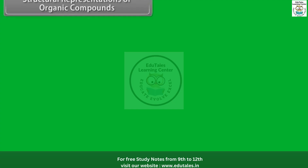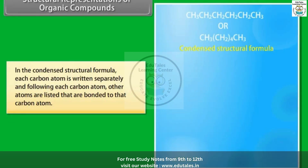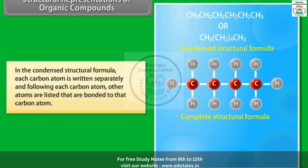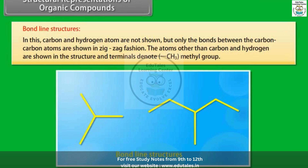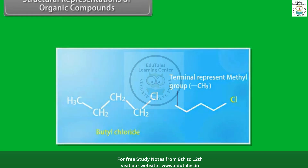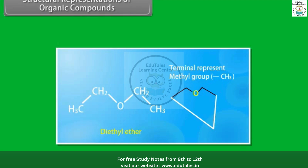In the condensed structural formula, each carbon atom is written separately, and following each carbon atom, the other atoms bonded to it are listed. In bond-line structures, carbon and hydrogen atoms are not shown; only the bonds between carbon-carbon atoms are shown in a zigzag fashion. Atoms other than carbon and hydrogen are shown in the structure, and the terminals denote methyl groups. For example: butyl chloride, propane, cyclohexane, diethyl ether, dimethylamine.